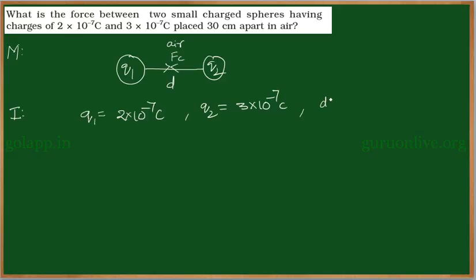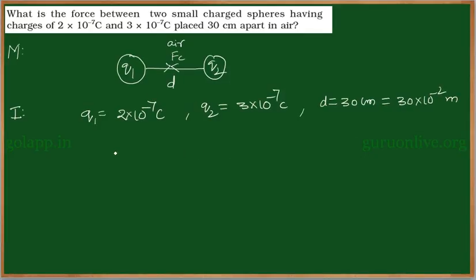...with the distance d equals 30 centimeters. If we convert into SI units, it can be written as 30×10⁻² meters. Here the two charges are kept in an air medium.